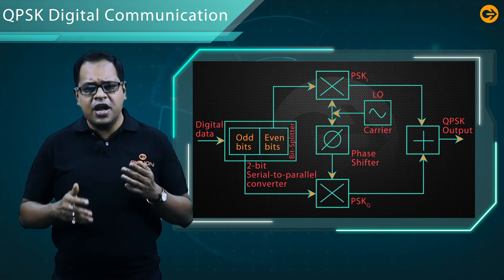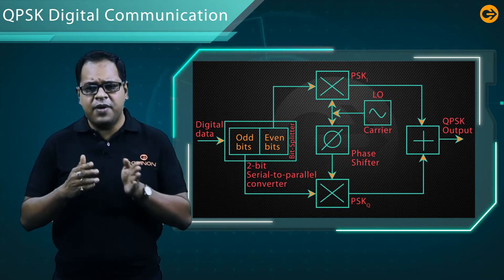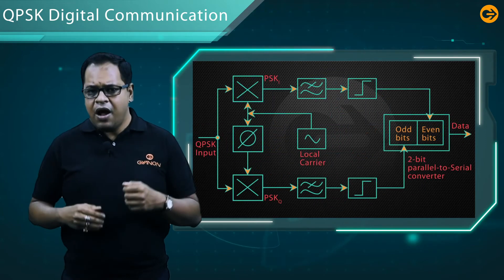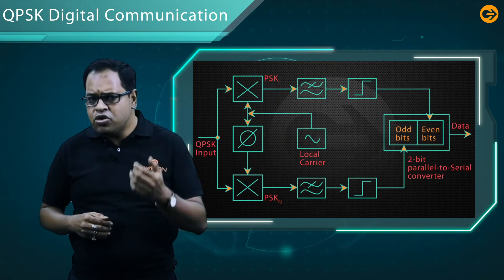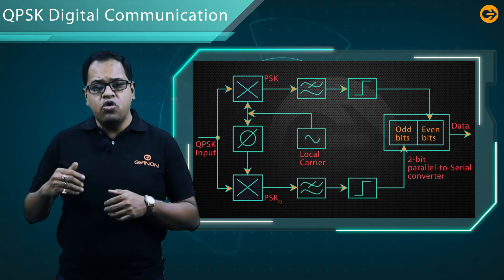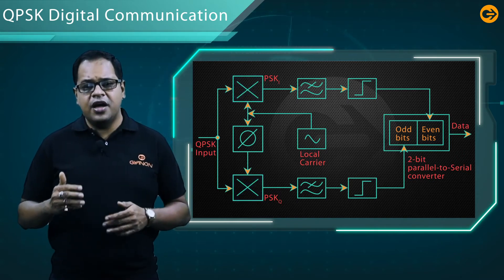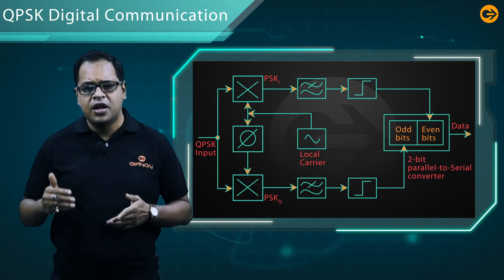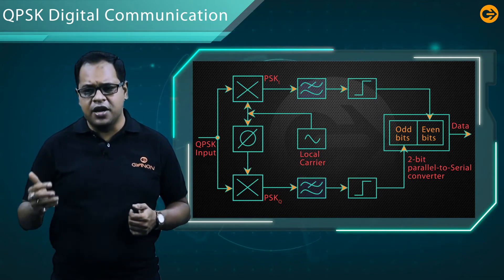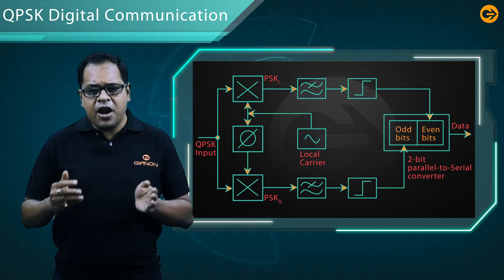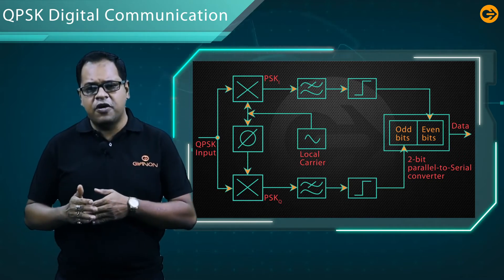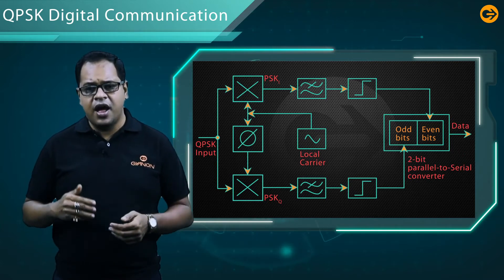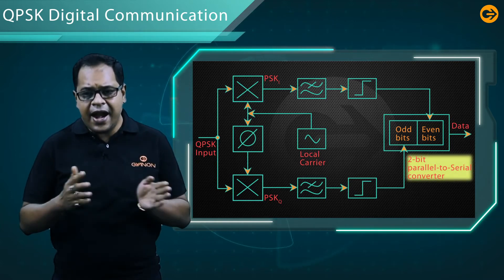Now let us discuss the demodulation section of QPSK. The two product detectors at the input of the demodulator simultaneously demodulate two BPSK signals. The pair of bits are recovered from the original data, and these signals after processing are passed to the parallel-to-serial converter.